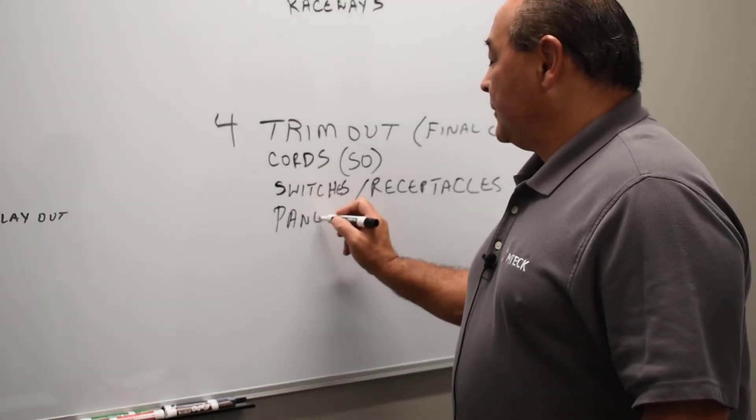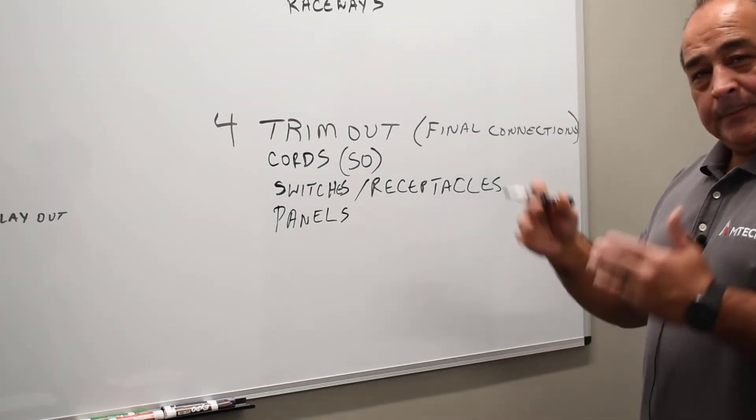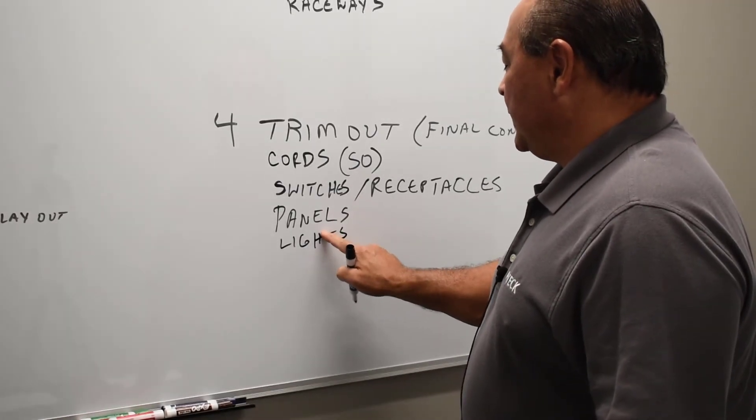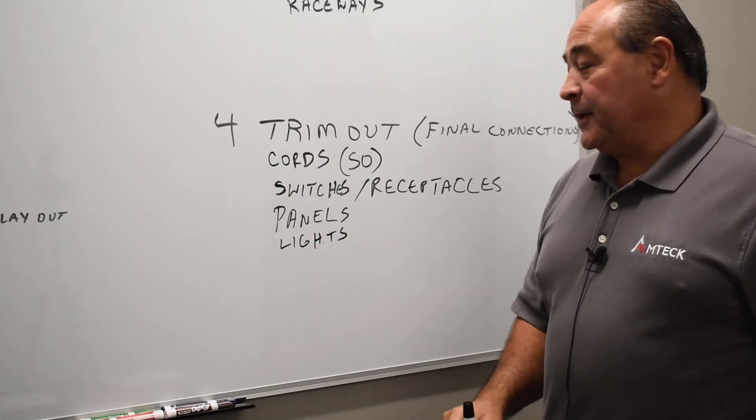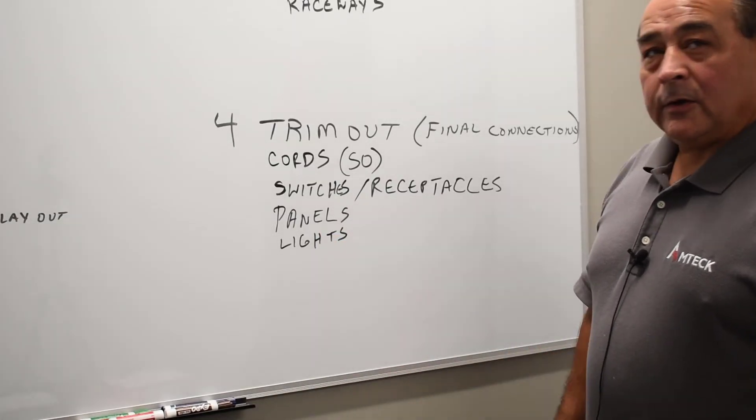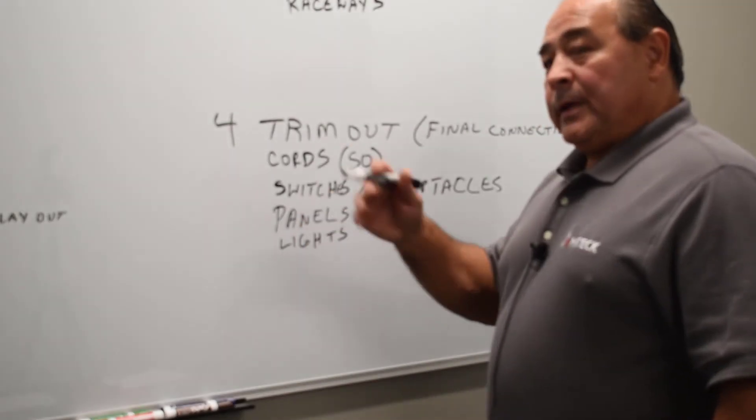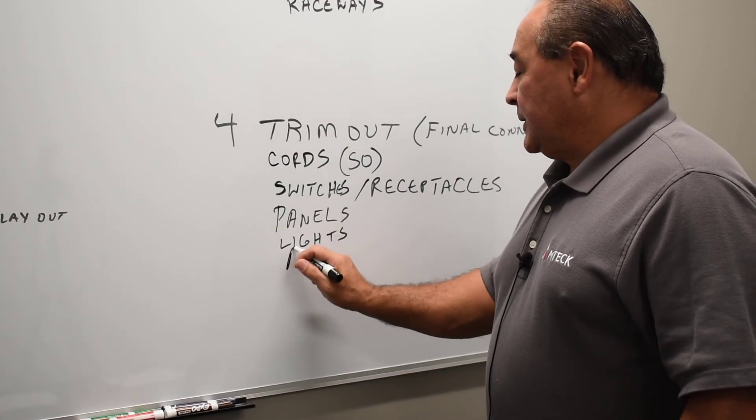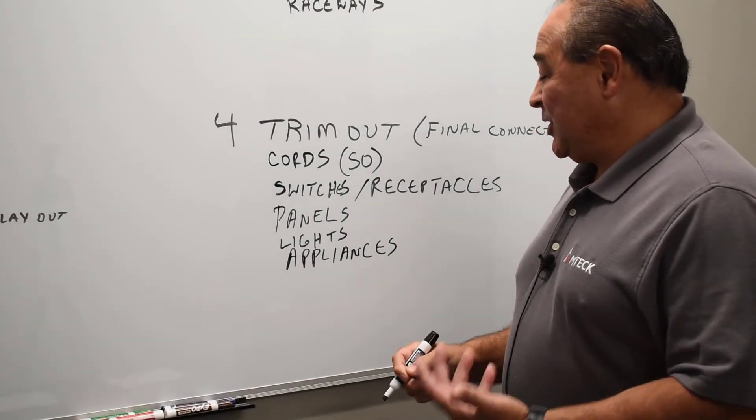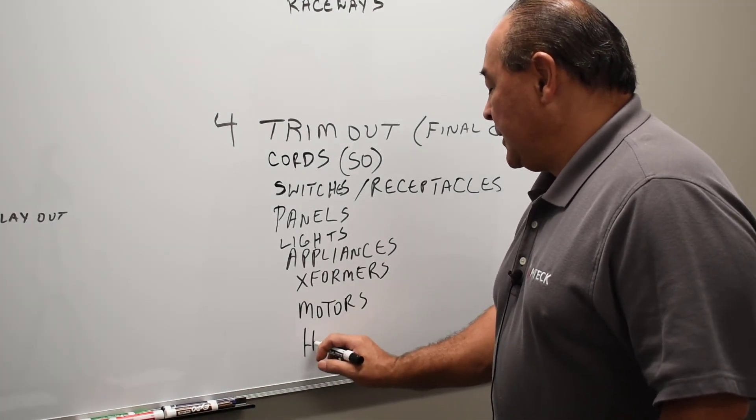After that, you go into panels. You know, everybody likes to make those panels all nice and pretty, make the final connections. Then you get in light fixtures. We call them light fixtures in the old days. In the National Electric Code, they're called luminaires, but in our field, the older guys will always call them light fixtures. The National Electric Code will call them luminaires. After that, we got some bigger stuff like appliances. Again, once appliances are set, you make a final connection to them, you're done. And we got transformers, we got motors, we got HVAC equipment.